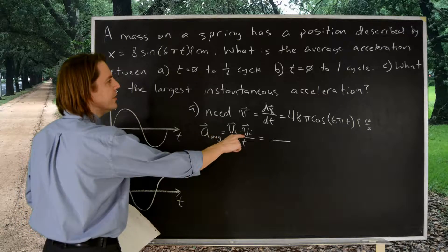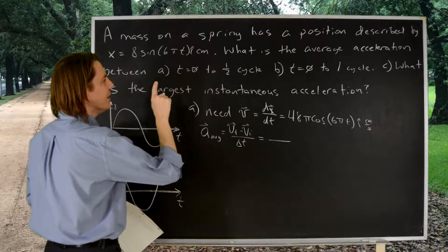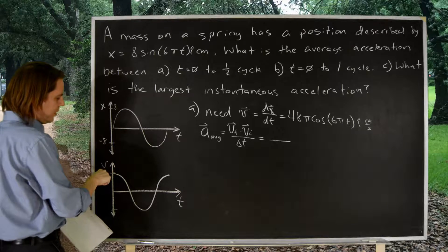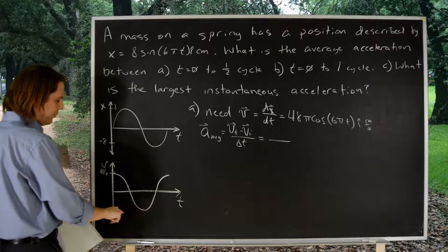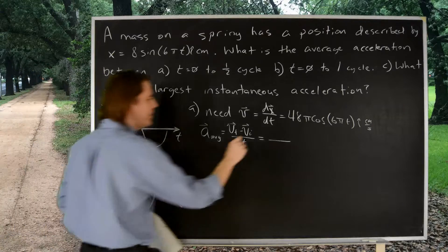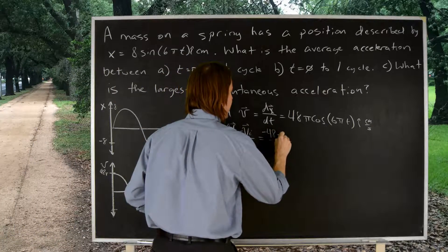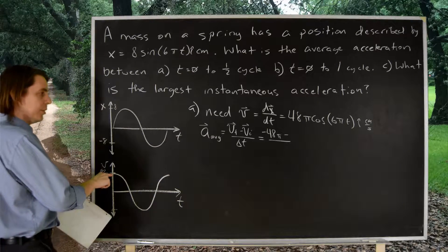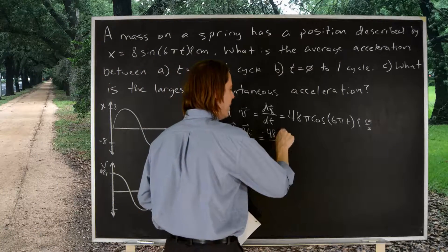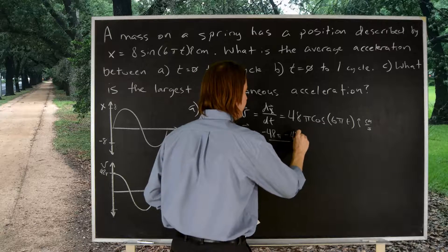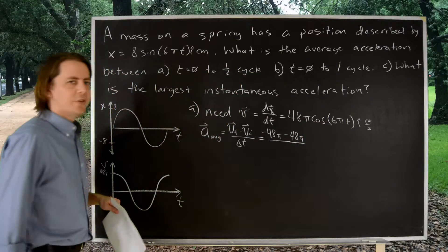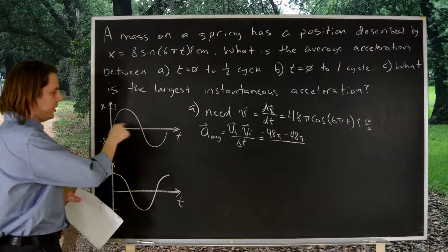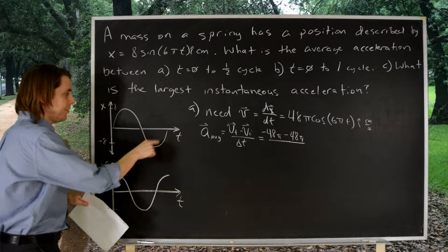We need the thing at a half cycle. So, at a half cycle over here, the velocity has made it down to negative 48 pi. So, v final is minus 48 pi. And minus v initial is 48 pi. So, minus 48 pi minus 48 pi over delta t.